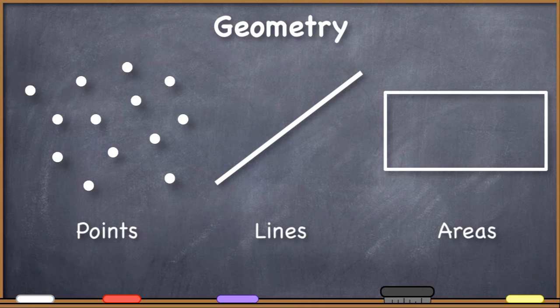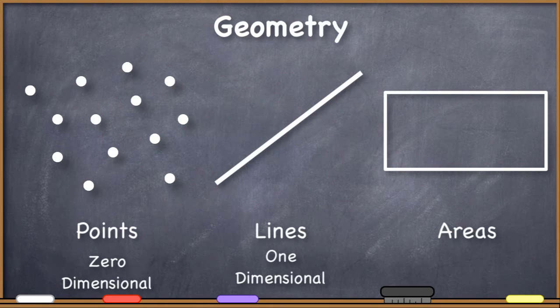Each of these representations has a specific dimensionality. A point is a zero-dimensional geometric representation. It doesn't have any length or width, it's just established by a set of coordinates, such as latitude and longitude. A line is a one-dimensional representation. It has length but no width. Typically lines are specified by two different points, or nodes, and then the connection between them.